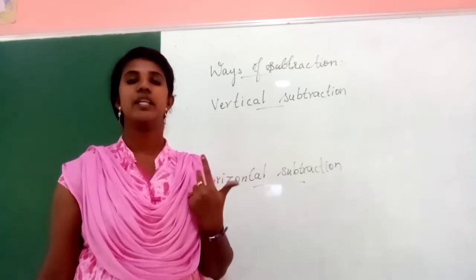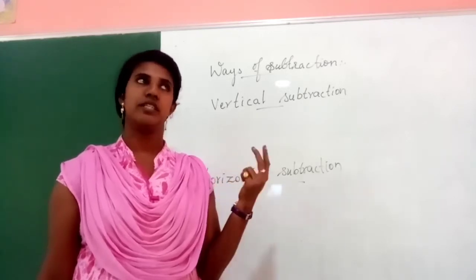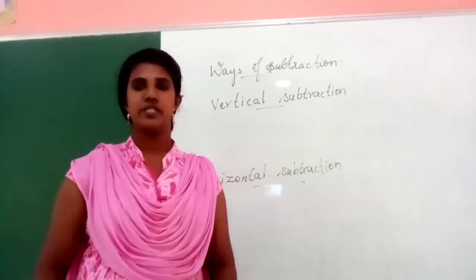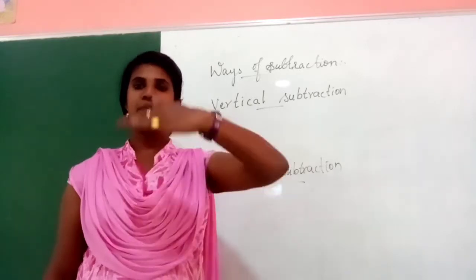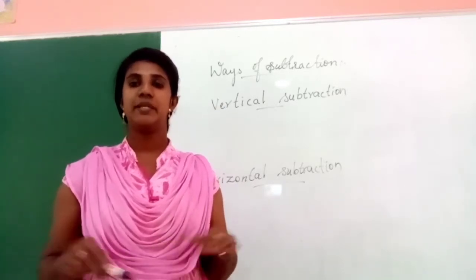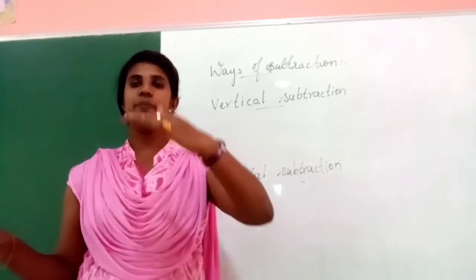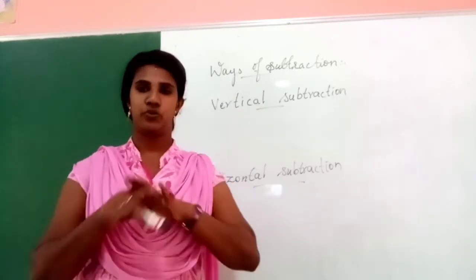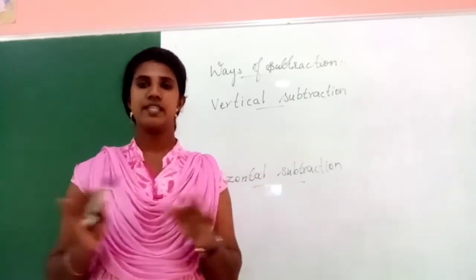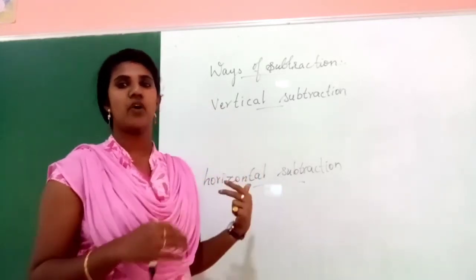Vertical means — take the example of steps. We climb down the steps one by one; that is vertical. And horizontal means like a bench or chairs. When we sit on a bench, people sit side by side — one on the right, one on the left. That is the horizontal position. We are using numbers to learn vertical and horizontal subtraction.